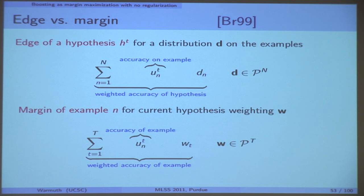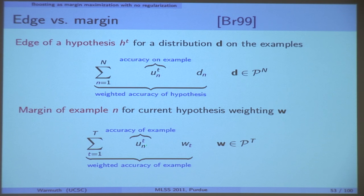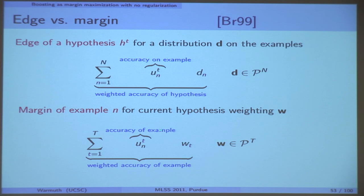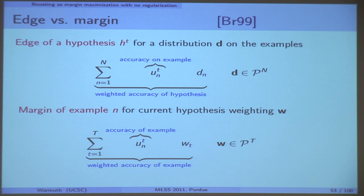The margin of an example: you start with the accuracy of a single example, but then you sum over the weights of the hypotheses. Here n is fixed — the example is fixed — and the other way around t is fixed, which is an edge. So the margin is the weighted accuracy per example. You put the u's in a matrix: in one case you sum along the row, and the other one along a column with different weights.